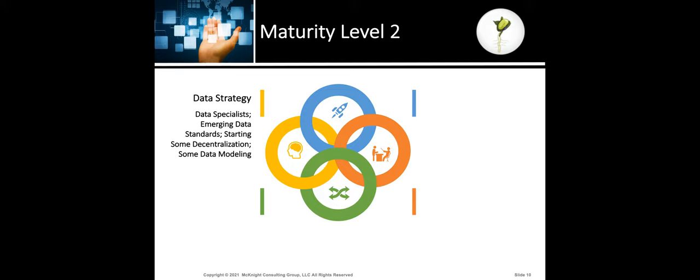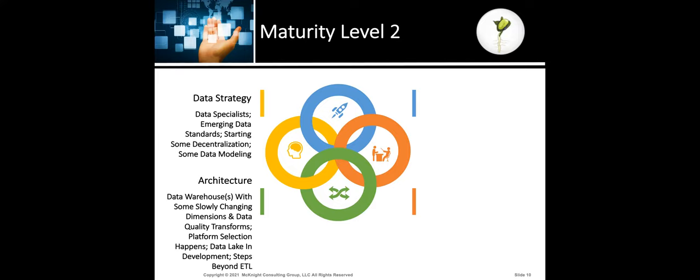There's some data modeling. Many organizations run on pre-packaged data models and that's about it. If you ask a level one organization to do data modeling for something new, the company goes into traction and it doesn't get done. You've got to have that skill for level two. Now architecture: you have a data warehouse or data warehouses — some level two organizations have too many in my opinion — but at least you have what somebody might call a data warehouse or two, with some slowly changing dimensions and some data quality transformations.